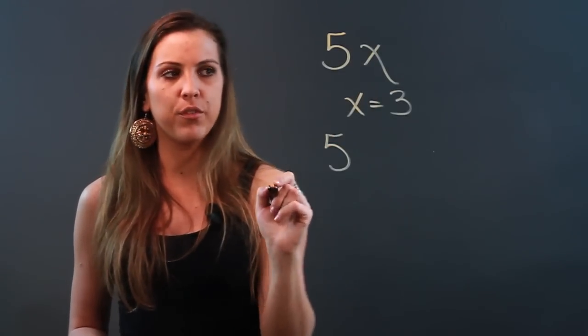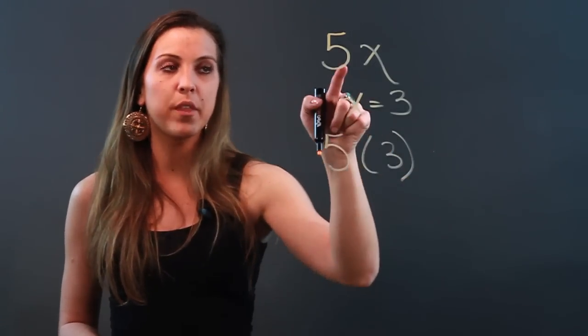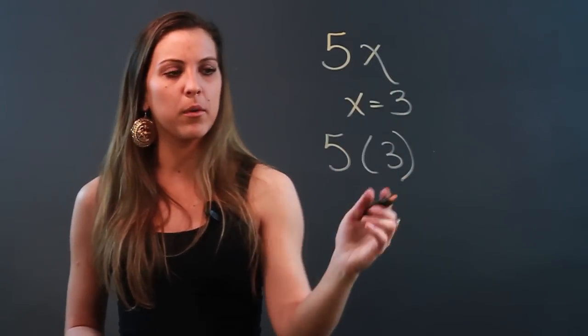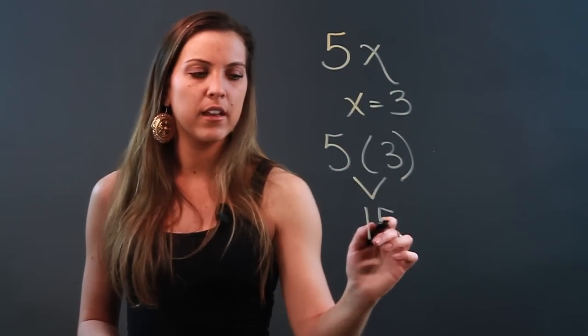So I'm going to keep my 5 as my coefficient, put a 3 in parentheses, and because I told you that a coefficient multiplies with the variable, we're going to multiply these and get 15.